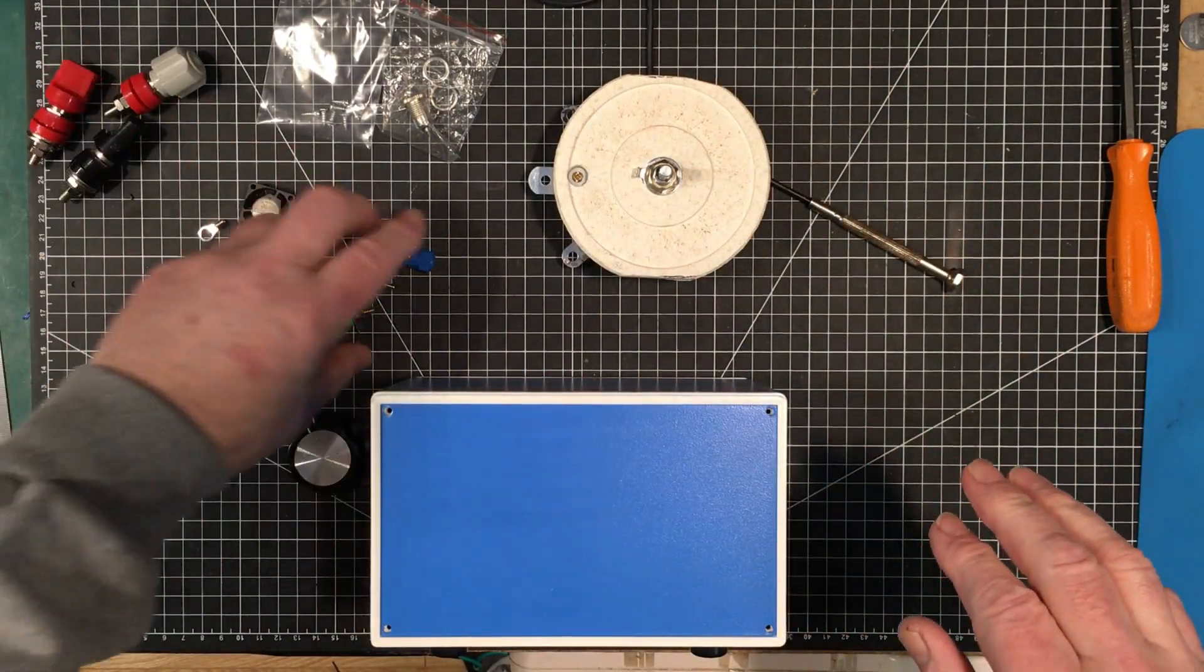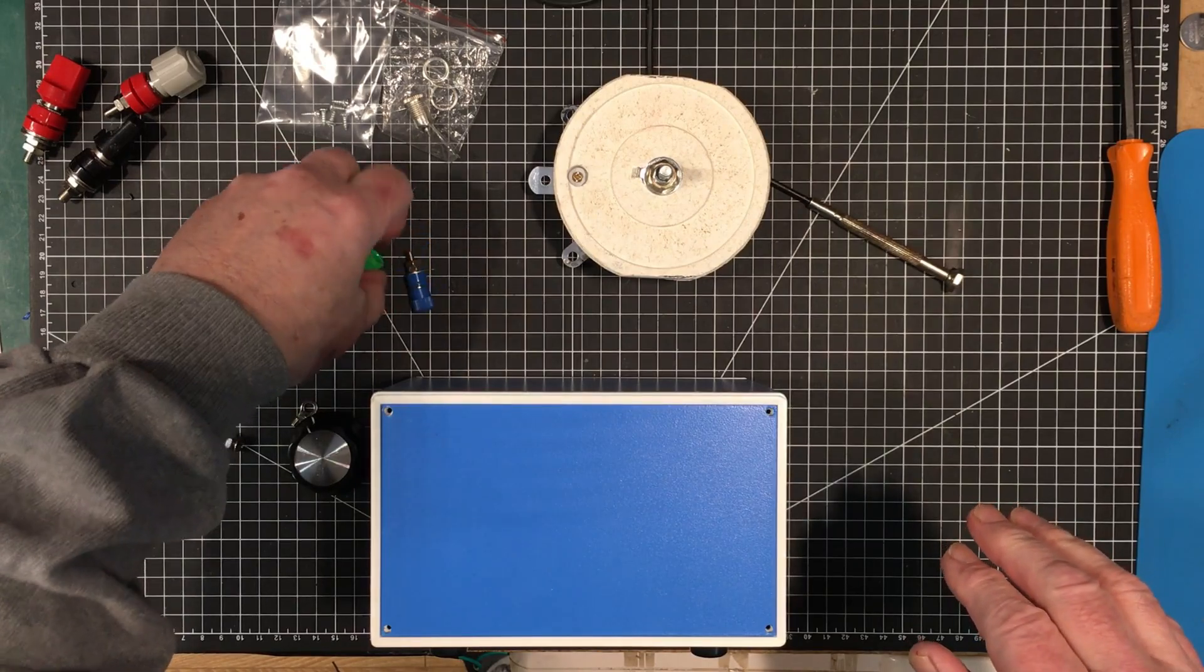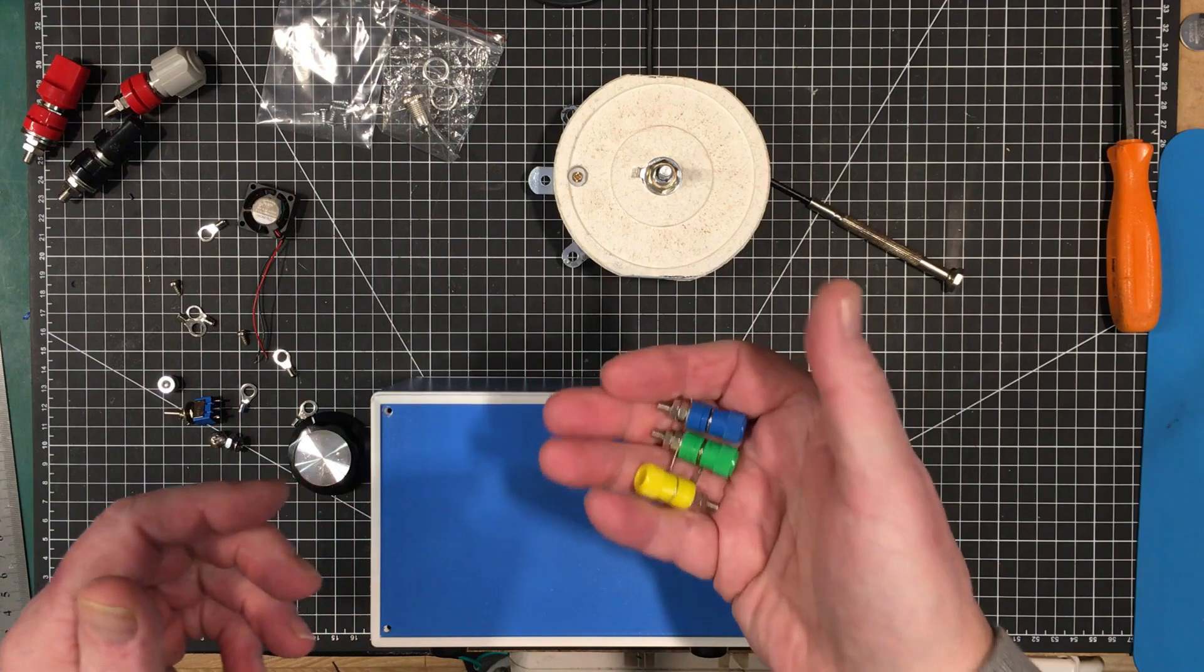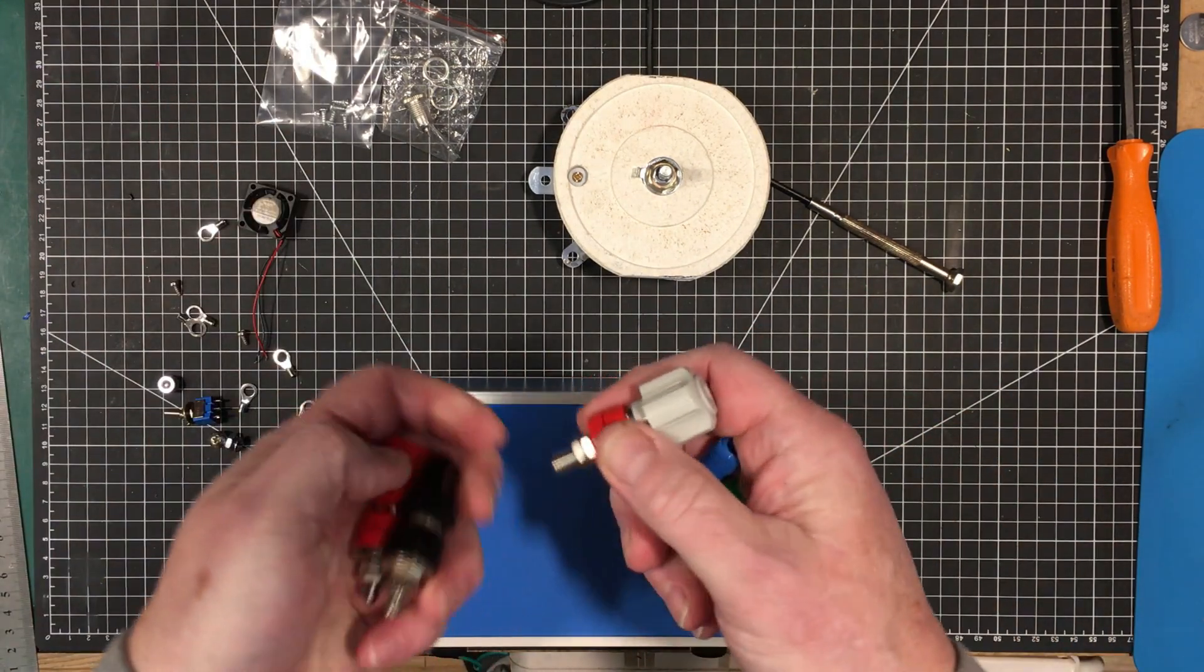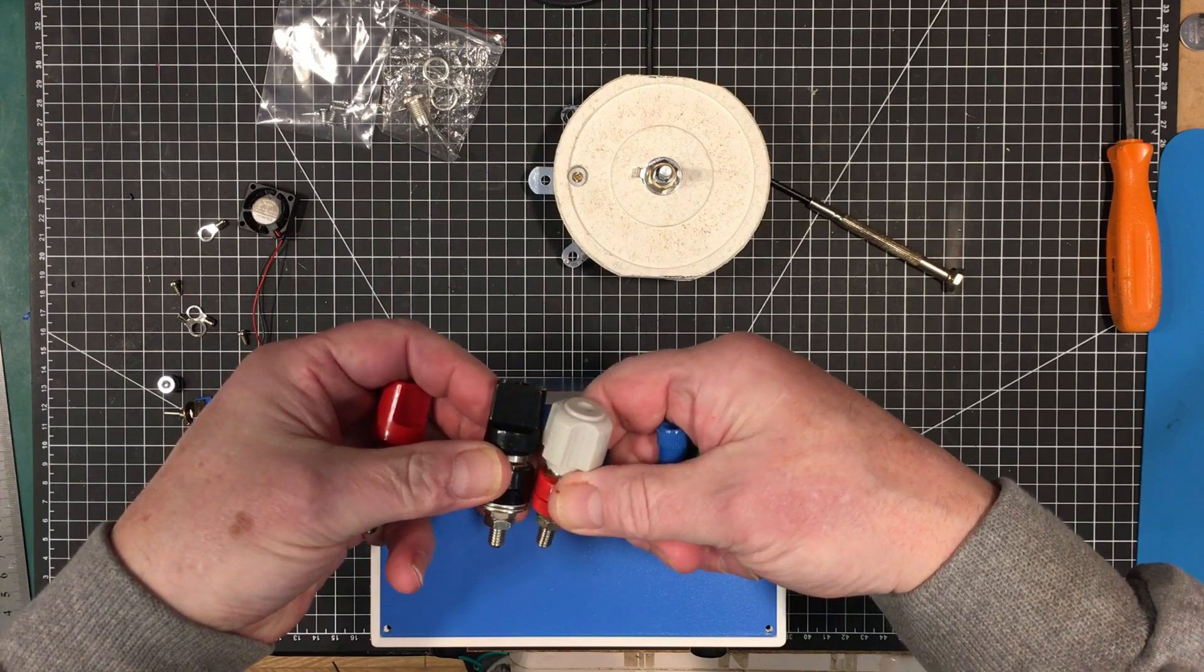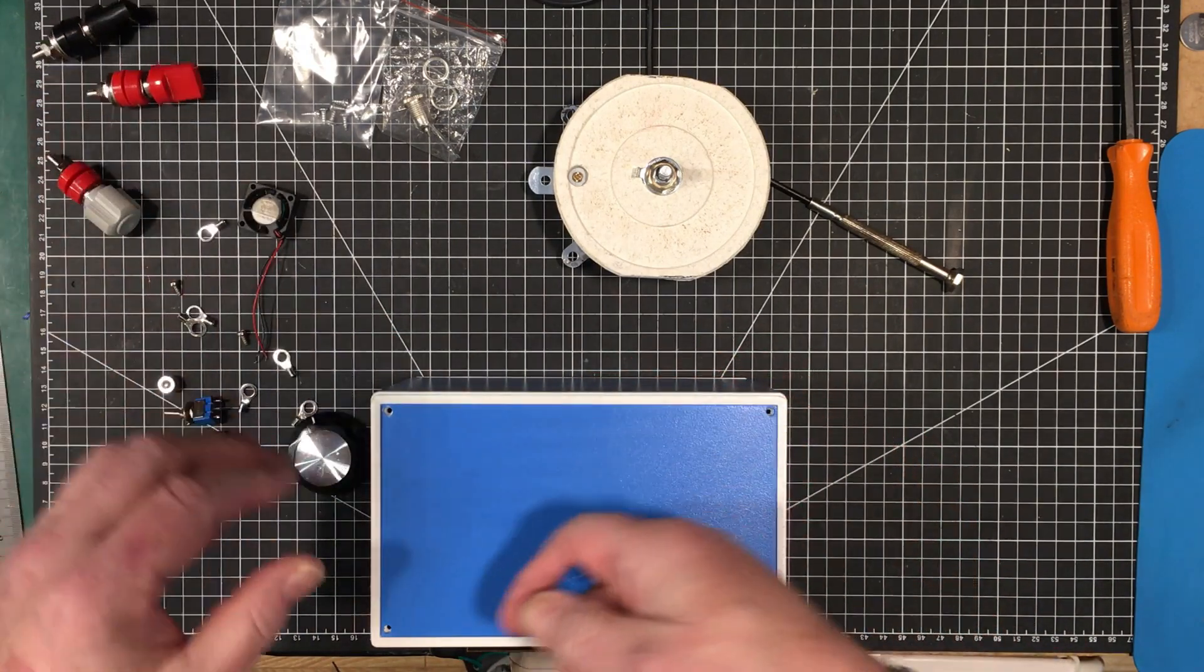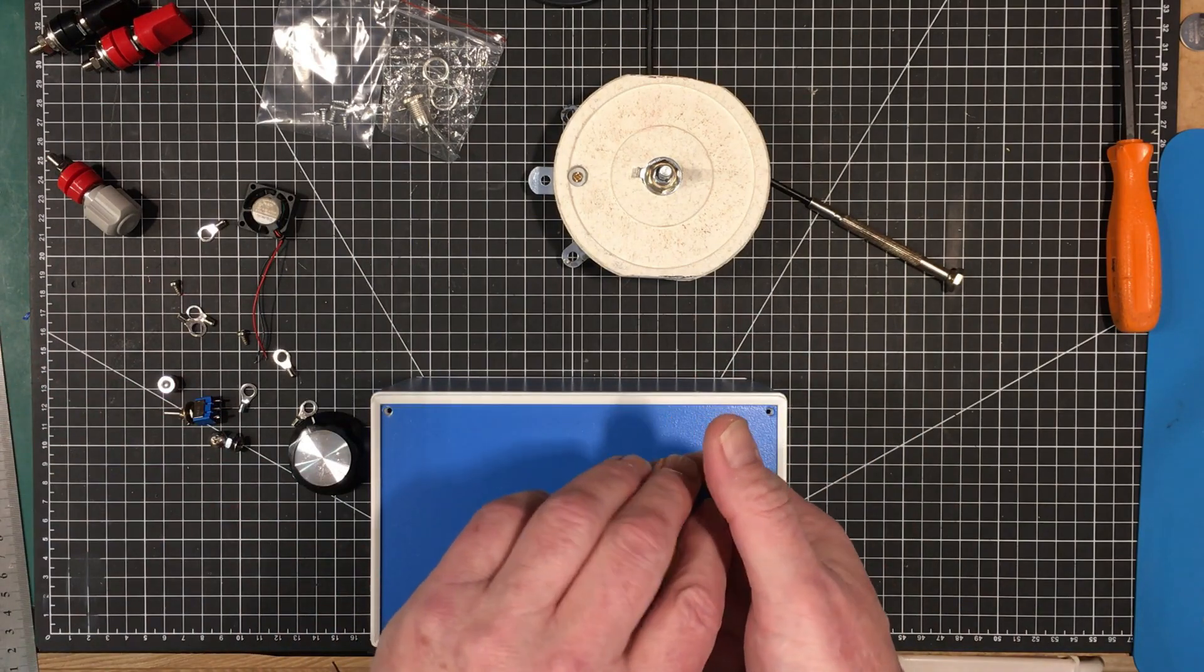I don't really need 50 amp binding posts. These little ones which can easily handle 10 amps will do fine. Another reason is these can get the standard spacing of 19 millimeters, which appeals to my OCD.